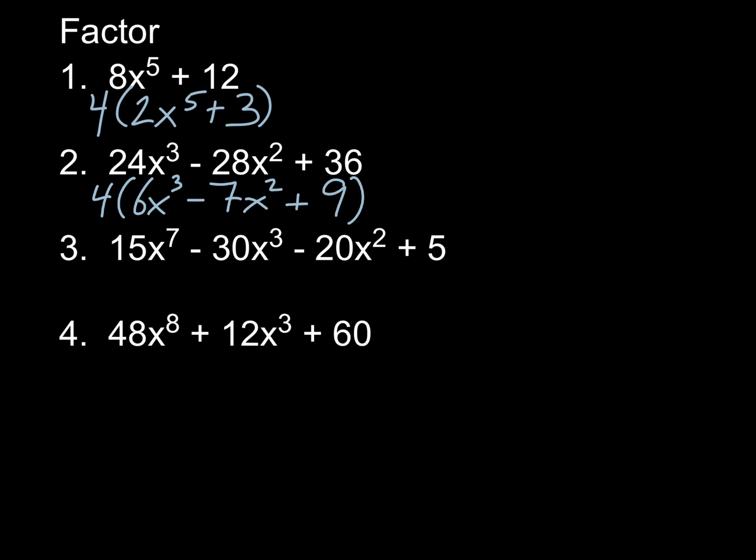Before I go on, I do want to take a look and see how can we know whether this is actually completely factored. How do we know we've got the biggest number out? The way you can tell is look at the numbers that are left inside. In this case, that's 6, 7, and 9. Can I divide 6, 7, and 9 by anything other than 1? No. There's no other number that goes into all three of those. So that means that the 4 that we pulled out was, in fact, the biggest number that we could pull out. So that one now is completely factored. That's your final answer.